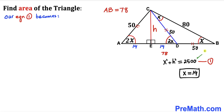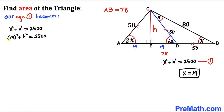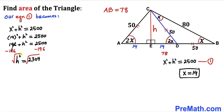Returning to equation one with x equals 14: 14 squared plus H squared equals 2500. Since 14 squared is 196, we get 196 plus H squared equals 2500. Subtracting 196 from both sides, H squared equals 2304. Taking the square root, H equals positive 48. So our height H is 48 units.